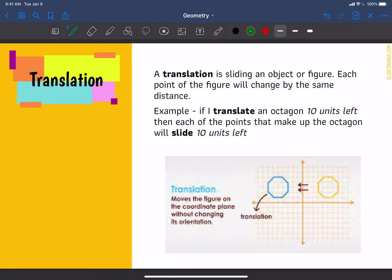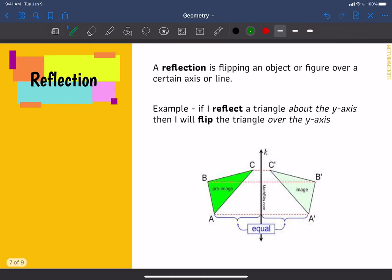So this right here would not be a translation, or it wouldn't just be a translation. So a translation requires you to just slide the shape, either to the right, the left, up, or down.